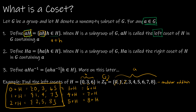For the right coset, we define HA as H times A — or H plus A in additive notation — when H is a subgroup of G. For addition, the right cosets H plus 0, H plus 1, and H plus 2 would give the same subsets as the left cosets, so sometimes left and right cosets are the same.